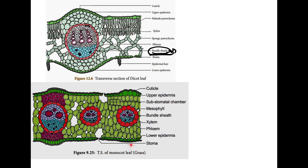Quickly coming to the monocot leaf — you have upper epidermis and lower epidermis. In dicot leaf, stomata are mainly on the ventral surface, but in monocot leaf, stomata are present on both the upper epidermis and lower epidermis. Both upper and lower epidermis are covered by a layer of cuticle.